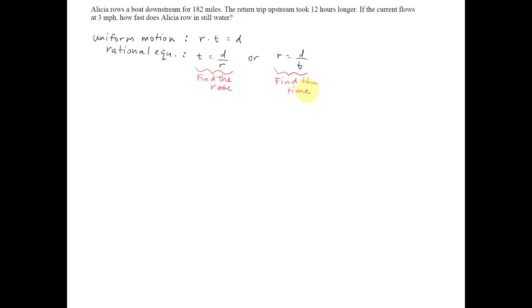Let's look at our problem again. If the current flows at 3 miles per hour, how fast does Alicia row in still water? How fast is the rate? Meaning we'll be using this first formula.